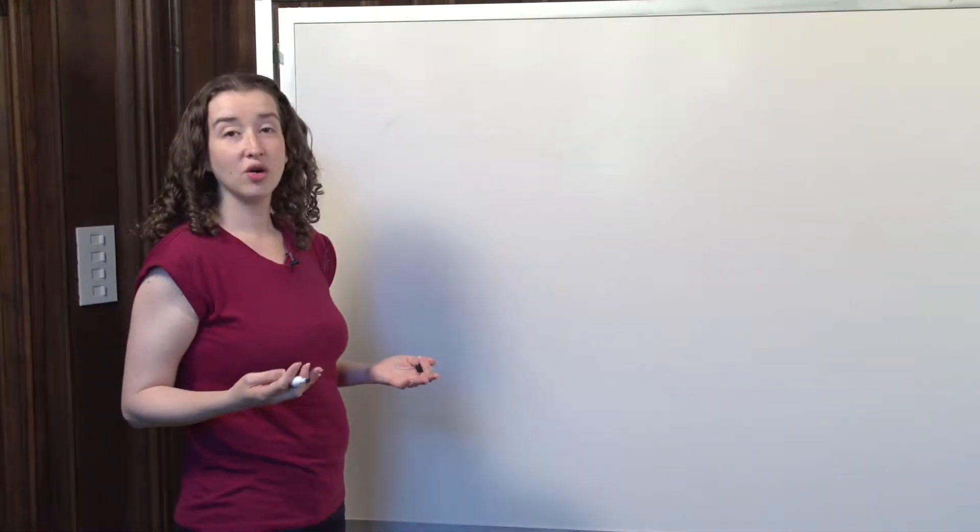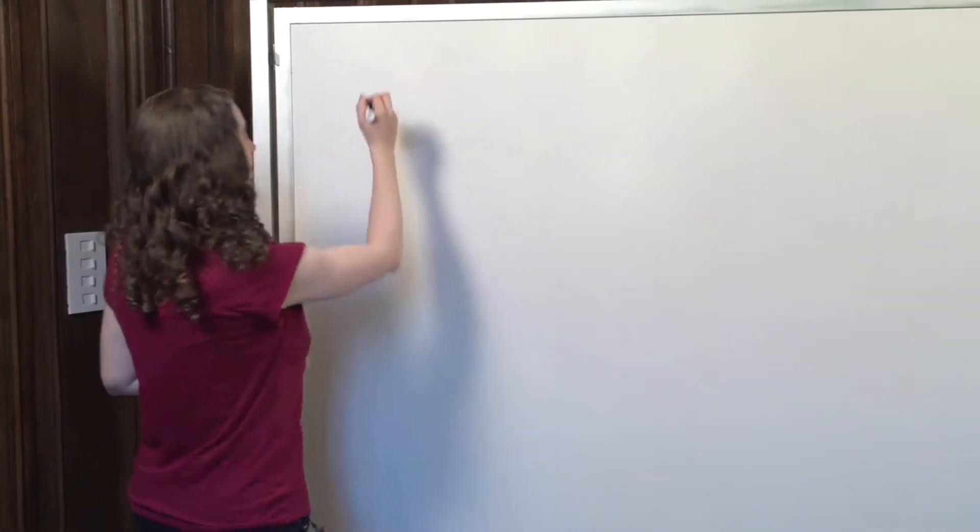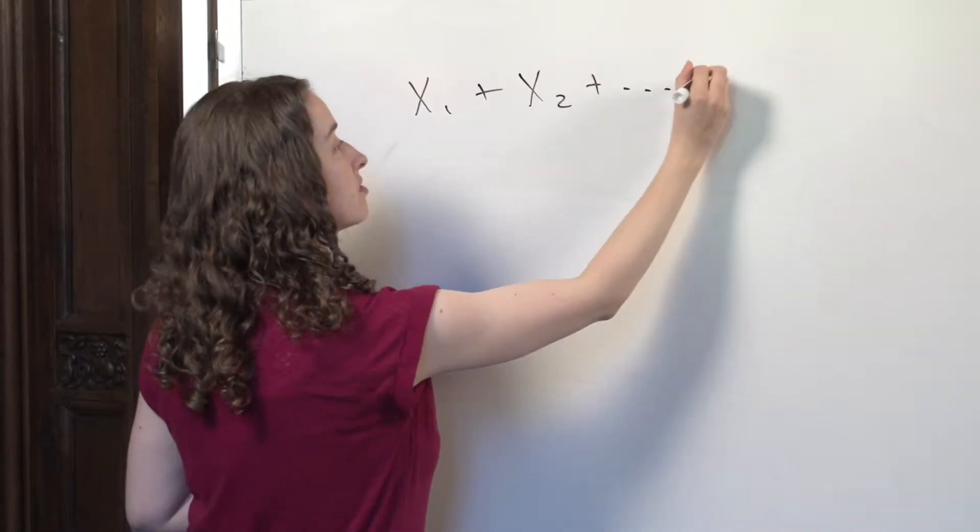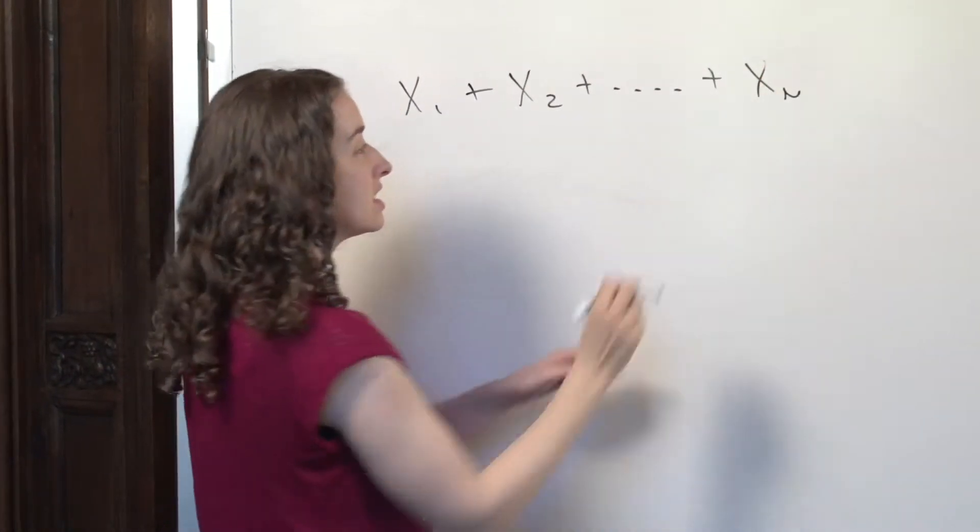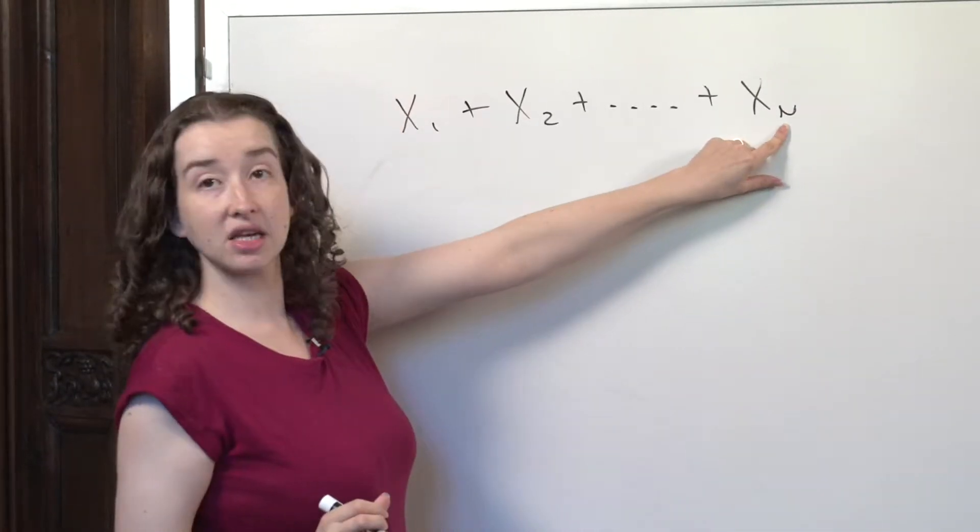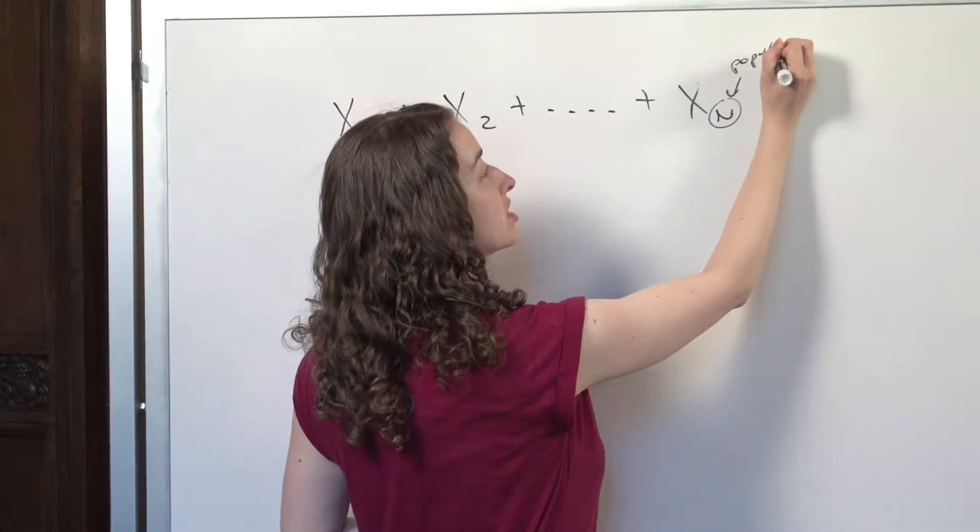We'll start with the mean. You already know what the mean of a population is, but let's write down the notation for it just to be sure. If you have a population consisting of capital N values, we'll use capital N to represent the size of the population, and I'll put a little note here so you can remember that, population size.